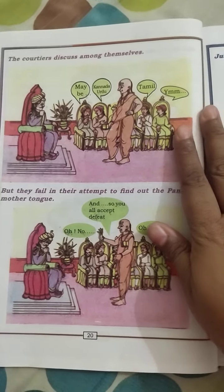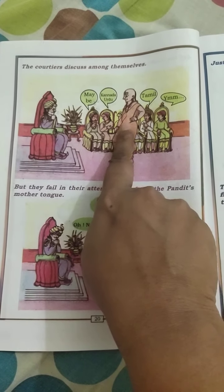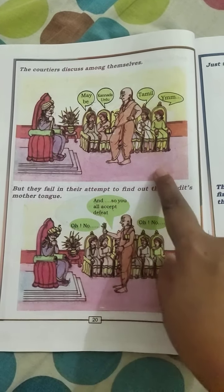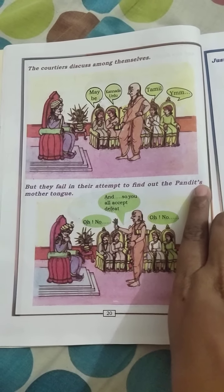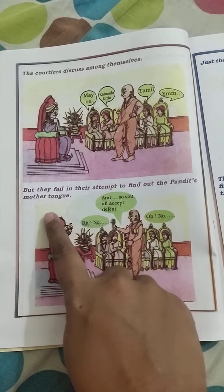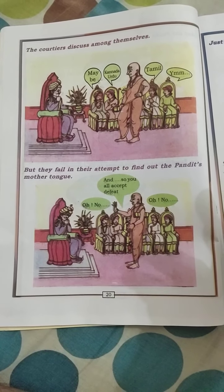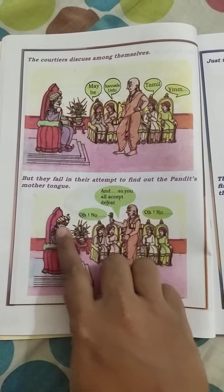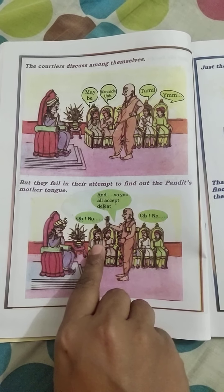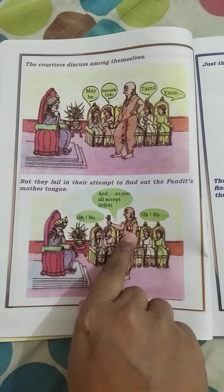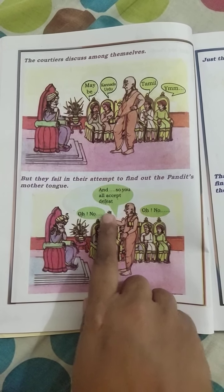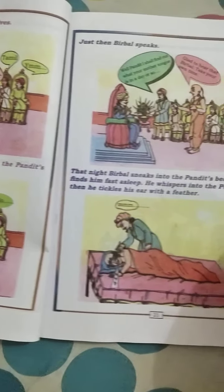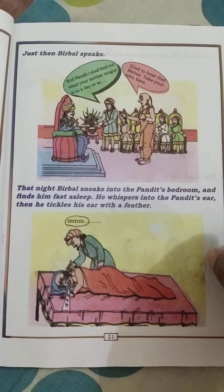The courtiers discussed among themselves — maybe Kannada, Urdu, Tamil — trying to figure out the Pandit's mother tongue. But they all failed. The ministers could not find out his mother tongue. The Pandit very proudly declared that they had all accepted defeat. He was very proud of his knowledge.